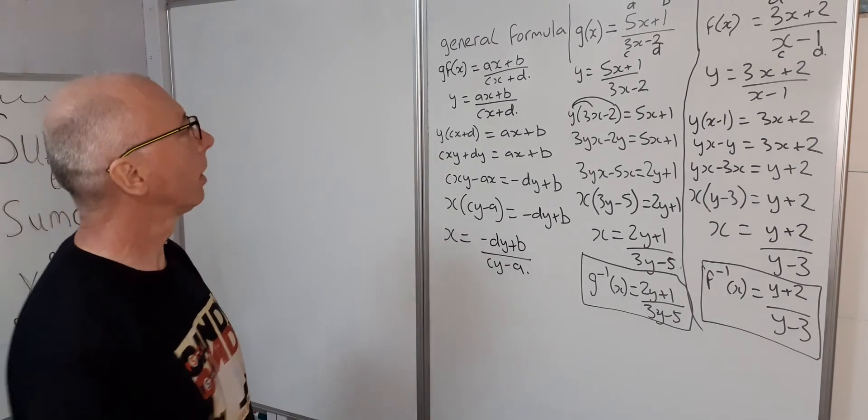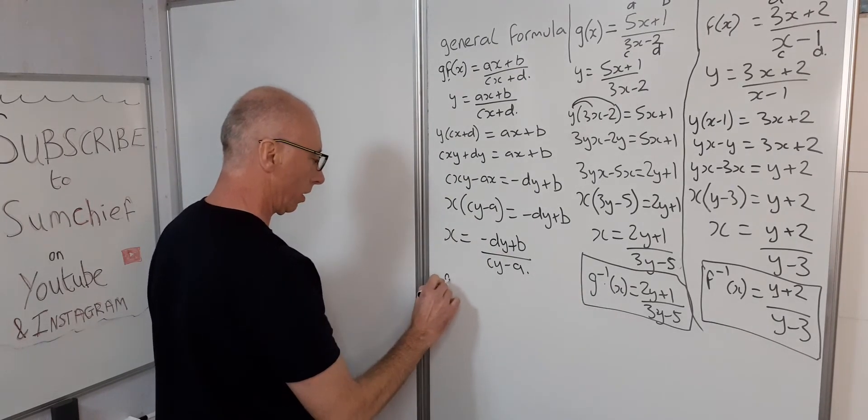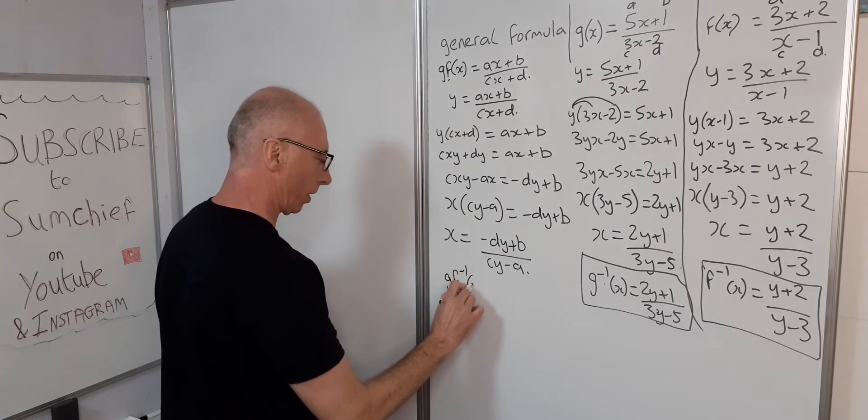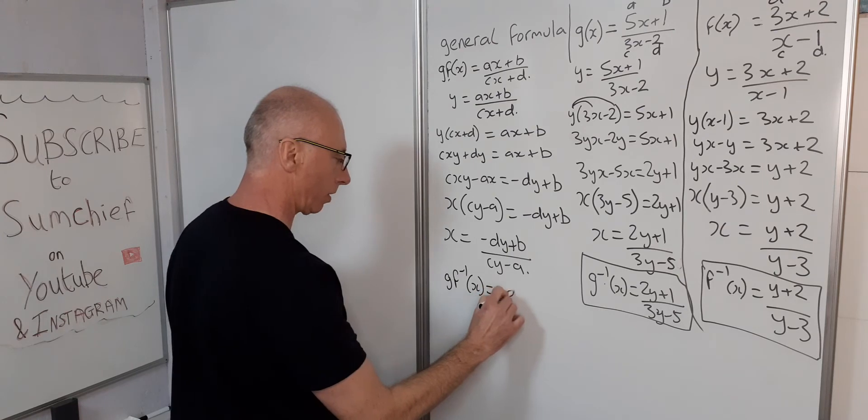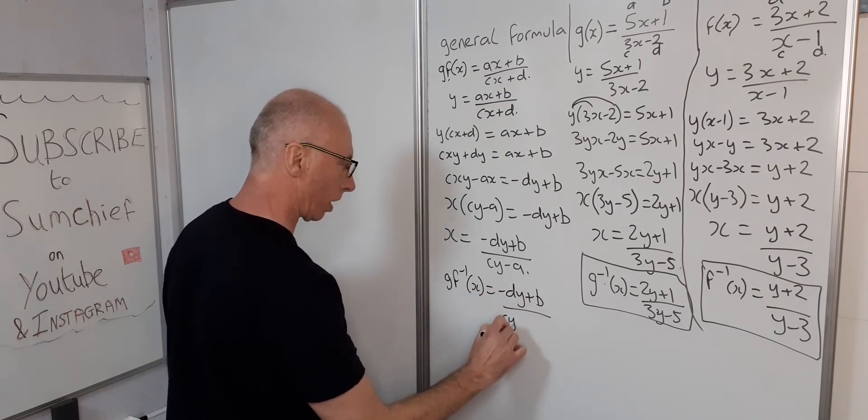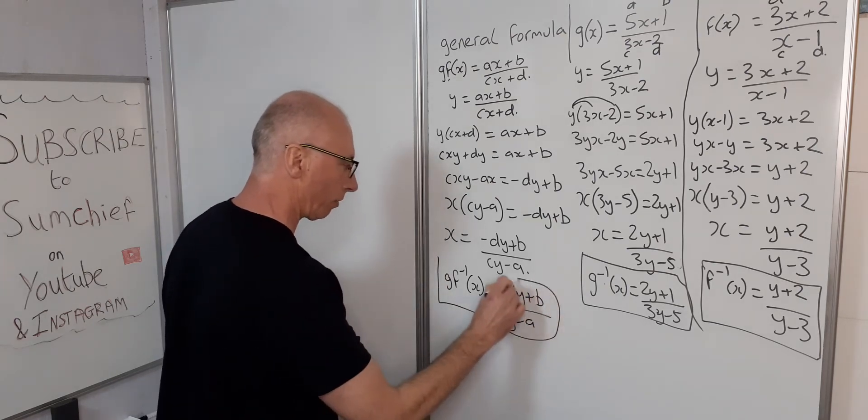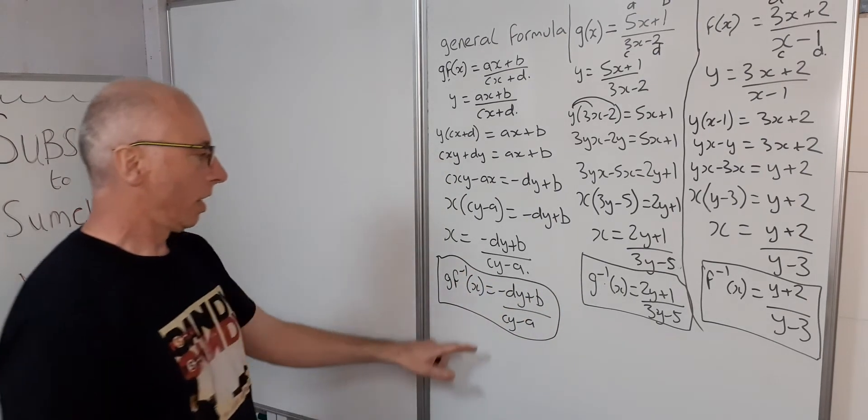Okay, use the notation for this one as we did here. So gf to the minus one of x equals minus dy plus b over cy minus a. That will be our general formula.